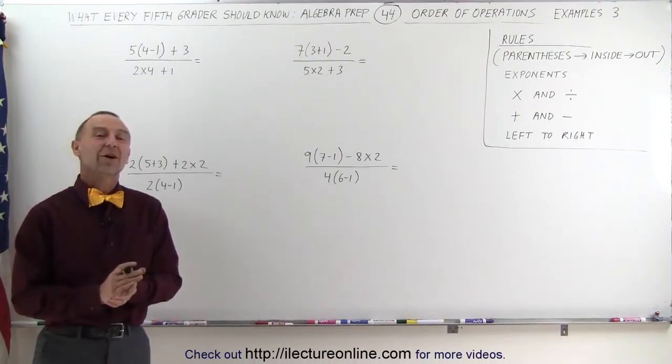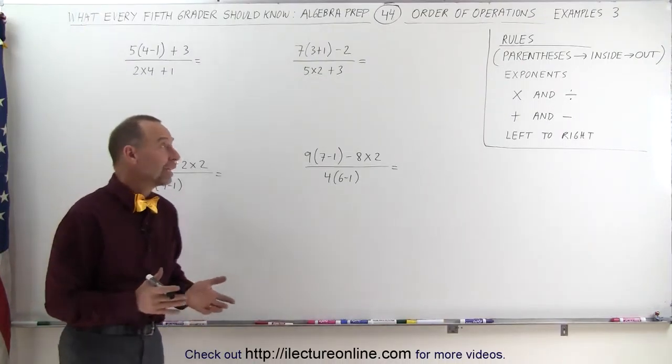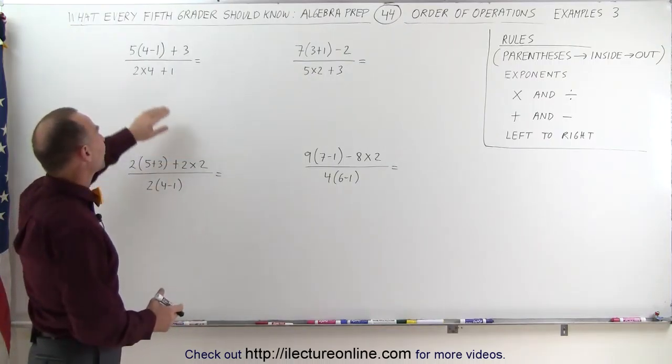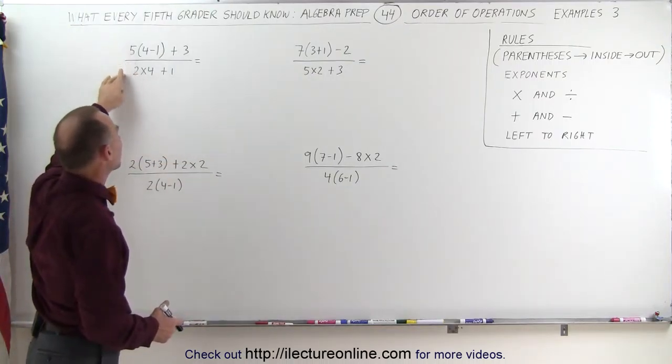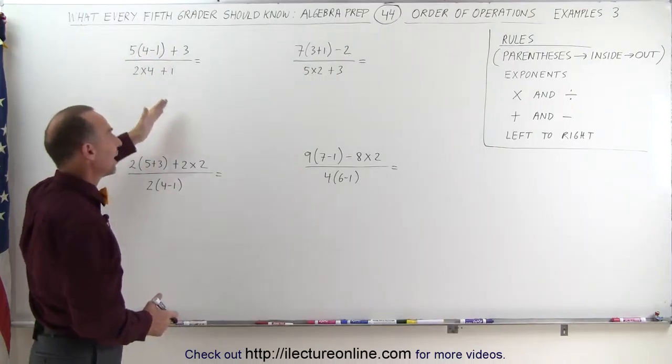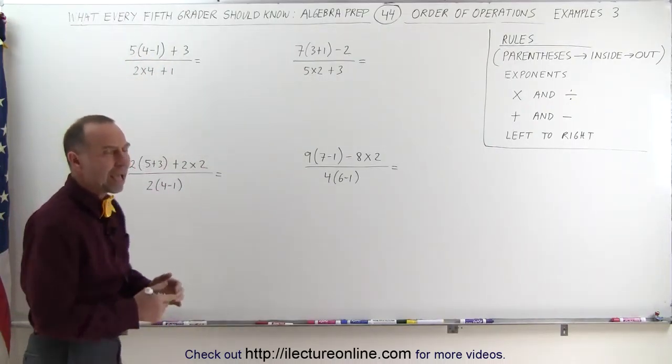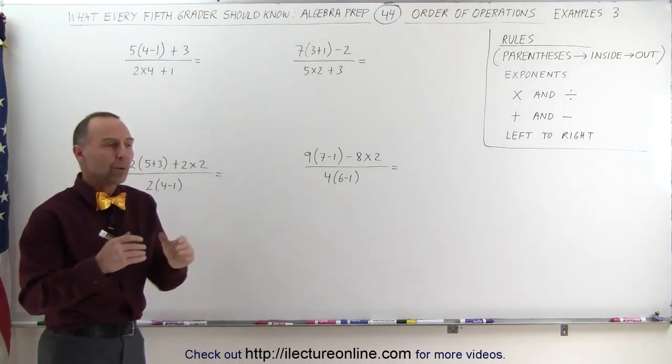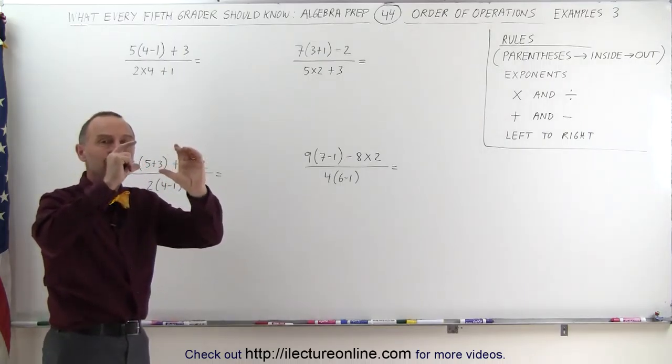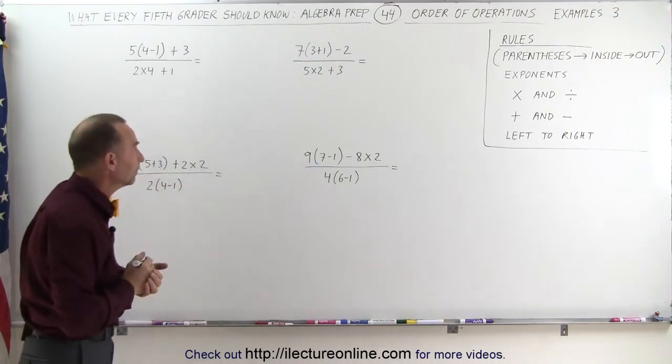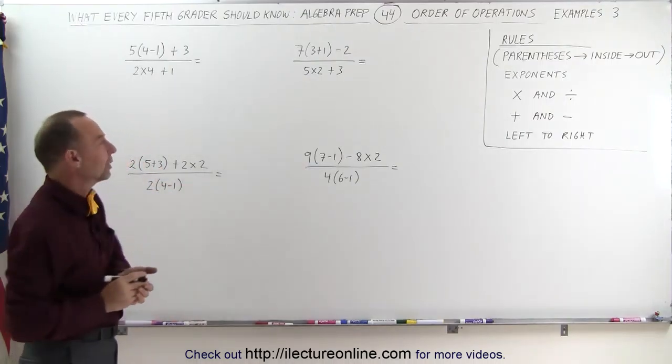Welcome to our lecture online. Our third set of examples deals with rational expressions. A rational expression is where we have fractions, we have a numerator and a denominator, and we need to simplify that using the rules of operations. When we have a numerator and a denominator, we want to work out the numerator separate from the denominator before we finally divide the numerator by the denominator. Let me show you what I mean with that.